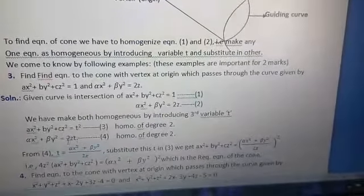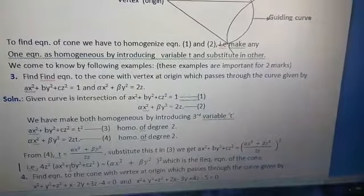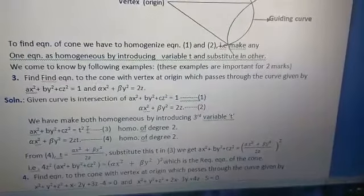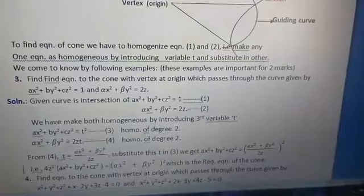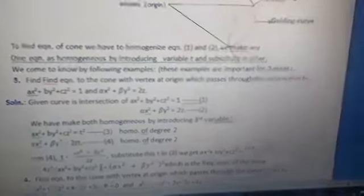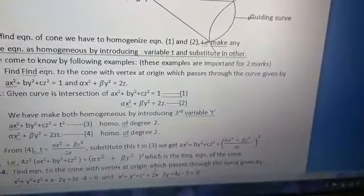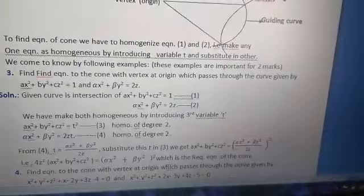And from equation 2, get the value of t: (αx² + βy²)/(2z). And substitute that in equation 3. Then equation becomes 4z²(ax² + by² + cz²) = (αx² + βy²)², which is the required equation of the cone. This is the procedure.